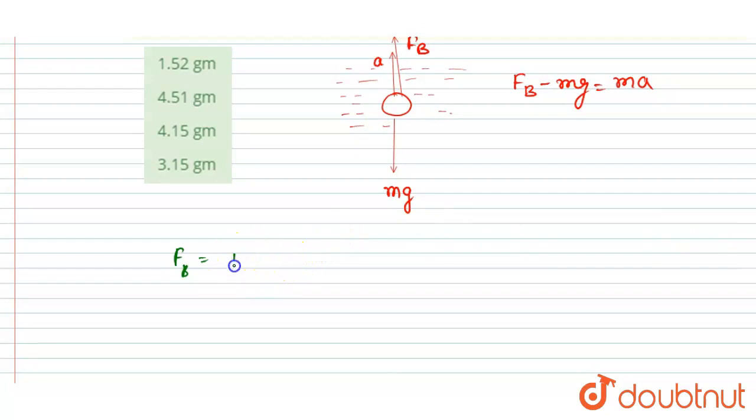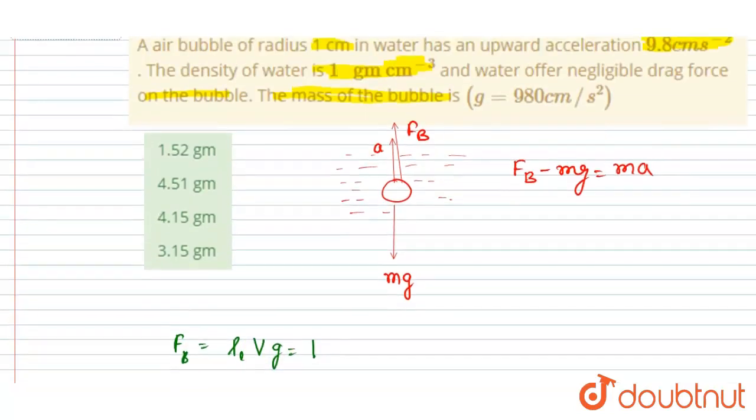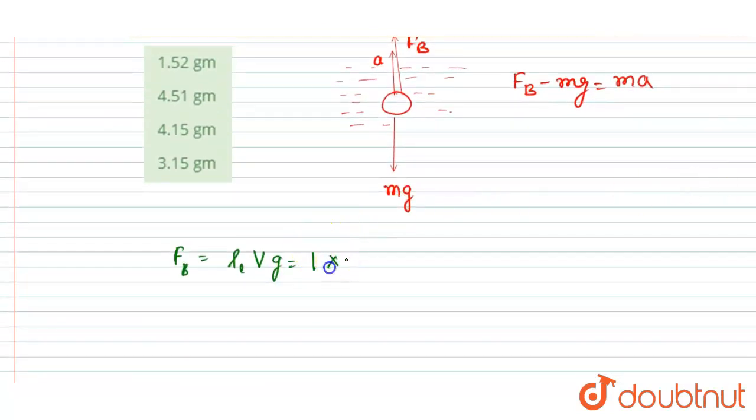So if I write the density of the water, density of the liquid into volume submerged, that is wholly submerged into g. So density of the water is, if you see here, is 1 g/cm³ and the volume of the bubble is 4/3 πr³. So r here is 1 cm, so r³ into g.